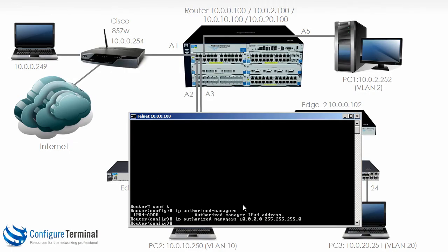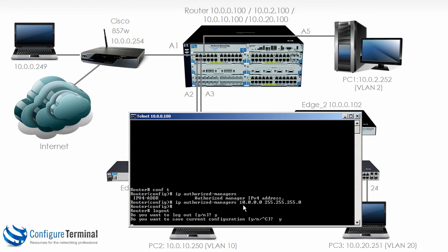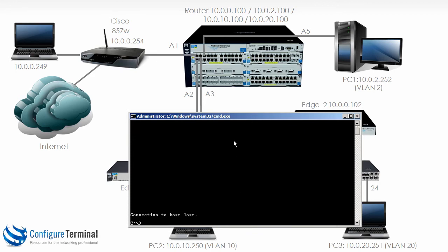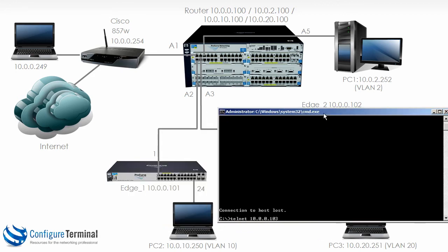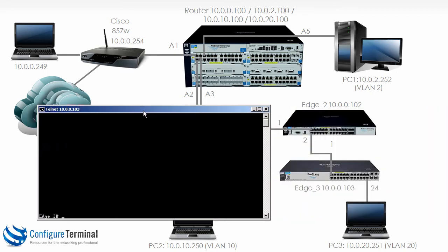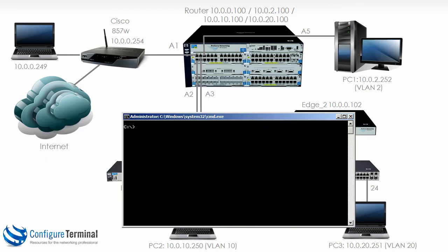However, let's log out and try to Telnet to Edge 3 from our machine on the management VLAN, VLAN 1. As you can see we are able to Telnet to Edge 3 from this machine, but we are not able to Telnet to Edge 3 from the user machine because we have restricted management access to VLAN 1. That lockdown was based on IP address, but you can also lock it down just based on a VLAN number.